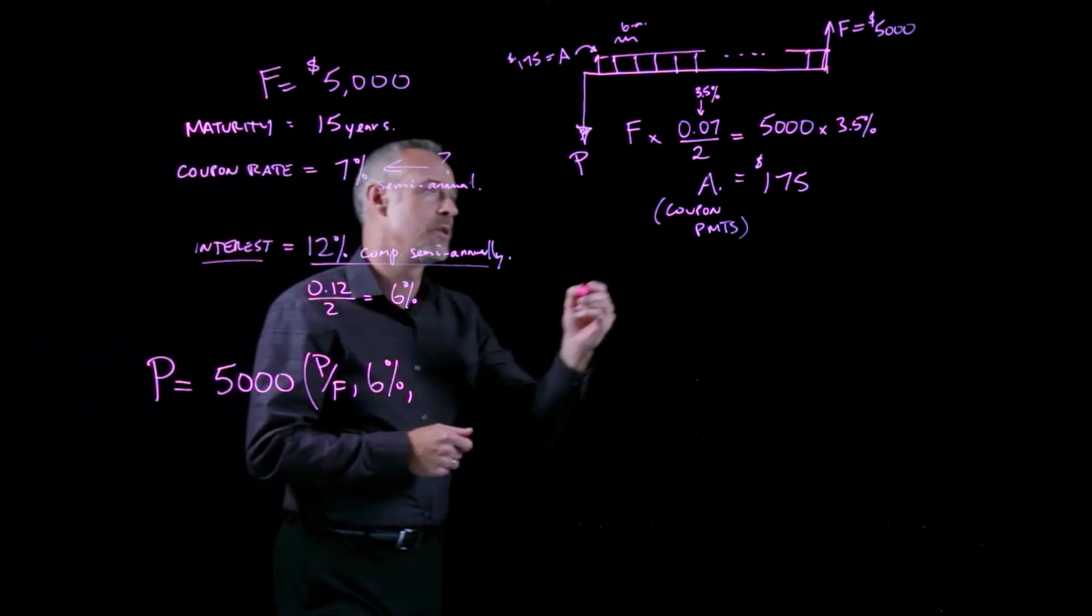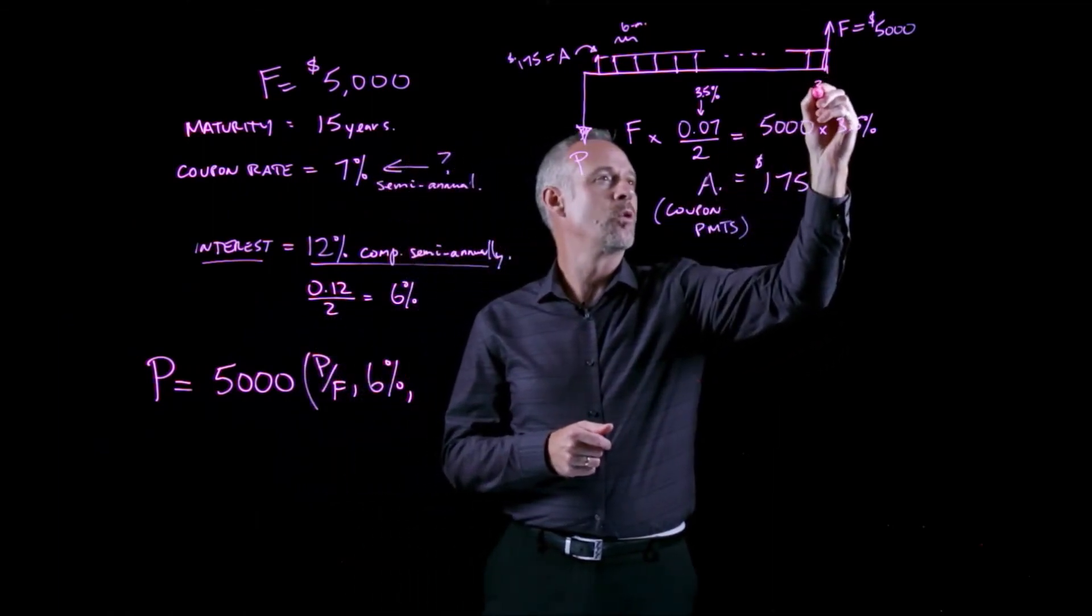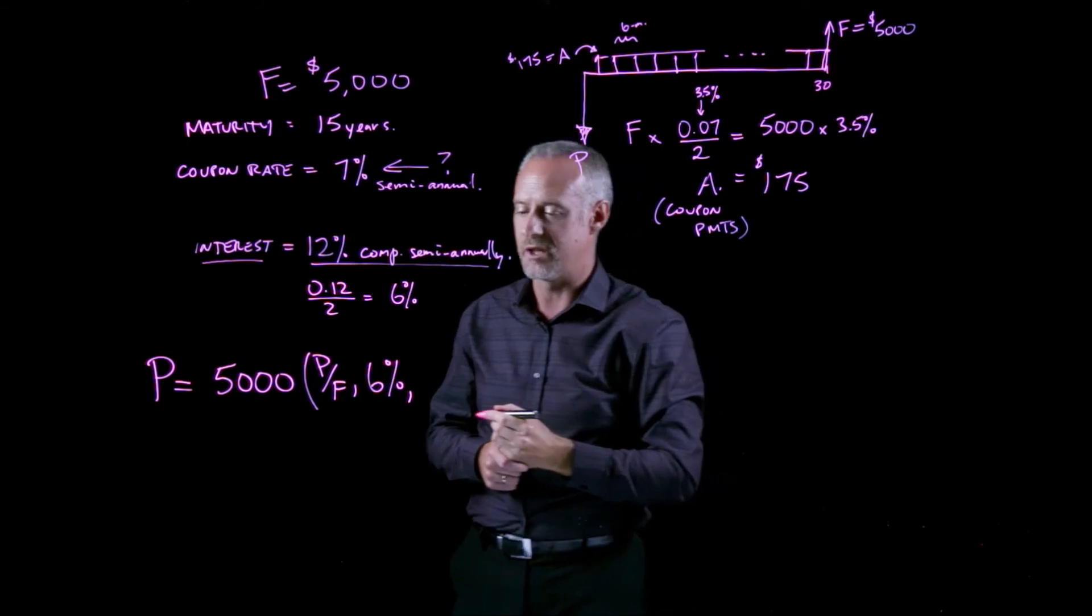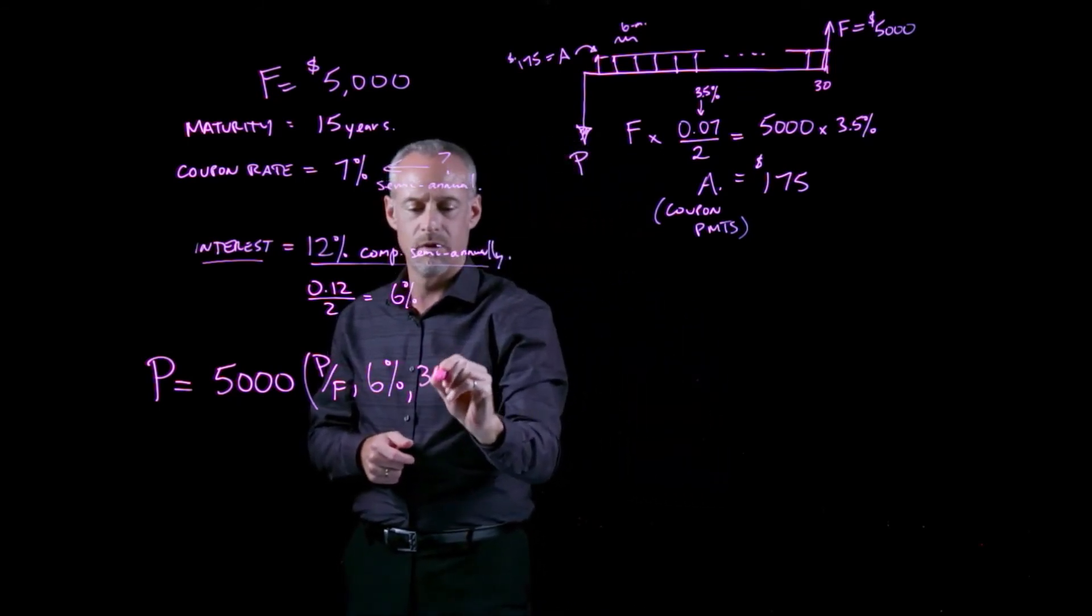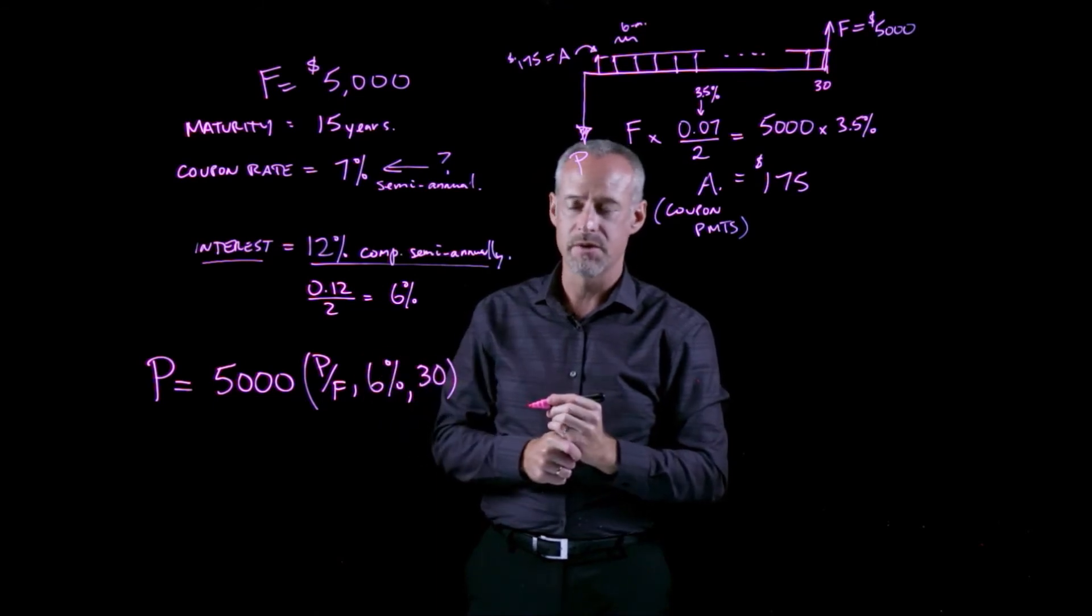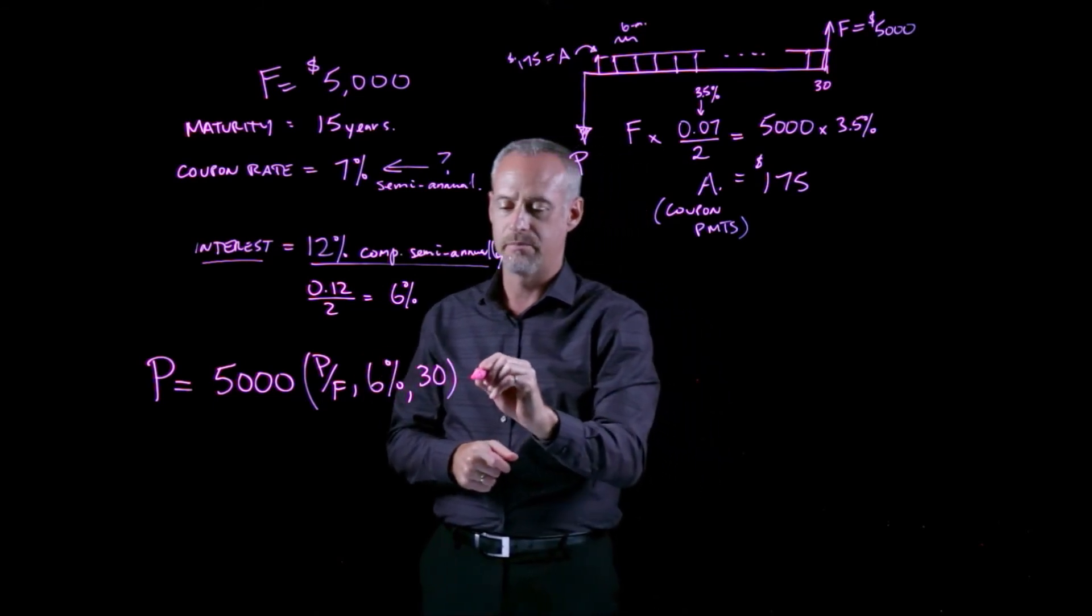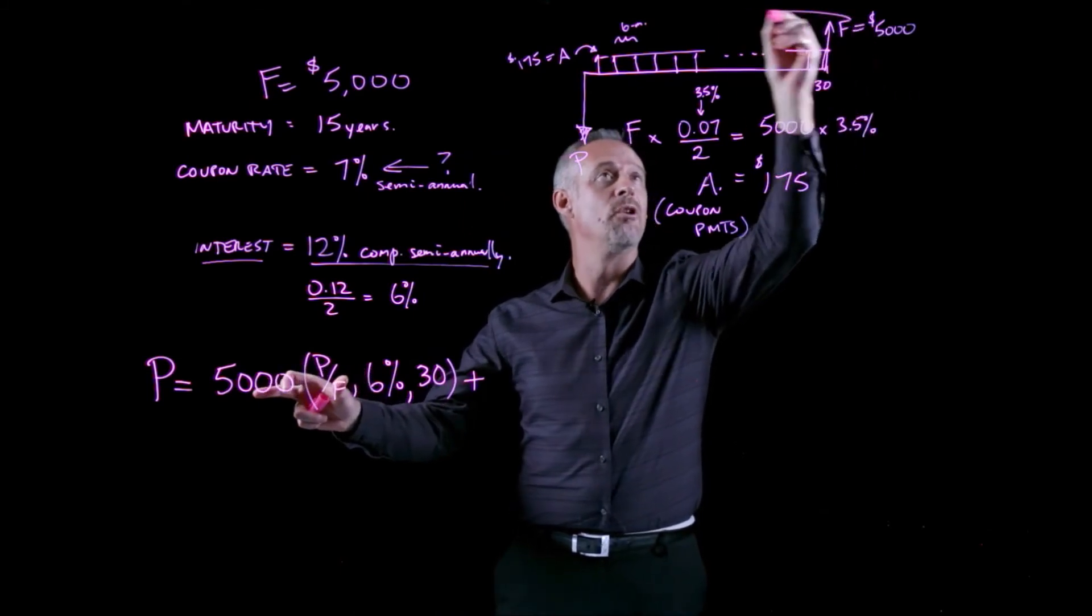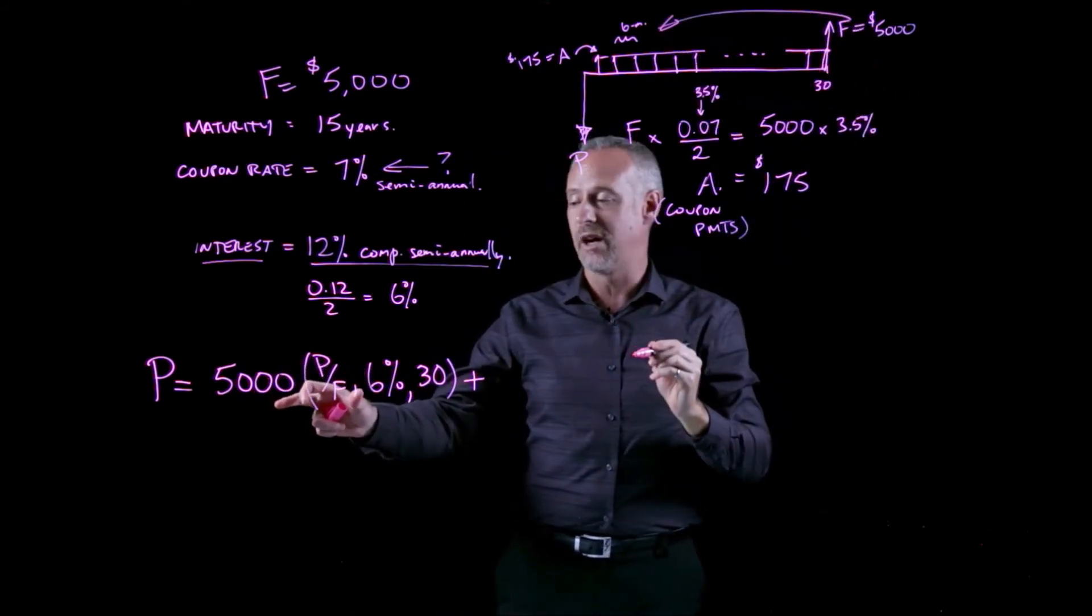Then I have to figure out how many six-month periods are there in this cash flow diagram. Remember, it's 15 years. So quite simply, we have 30 half years in 15 years. So I need to use 30 in the calculation of this compound interest factor. That's the first part that we need to convert back into a present value.